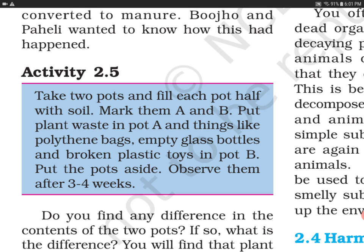So what will be your observation? In Pot A, the animal waste that was added will be converted into simpler substances — we can say it will be converted into manure. Whereas in Pot B, we had a polythene bag, empty glass bottles, and a broken plastic toy.